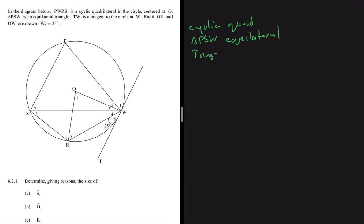TW is a tangent to the circle, so we have tangent and then we have radii OR and OW drawn. We are told that w1 equals 25 degrees. So all the questions that we are going to answer, we are going to stick to these keywords except for basic things like angles on a straight line.